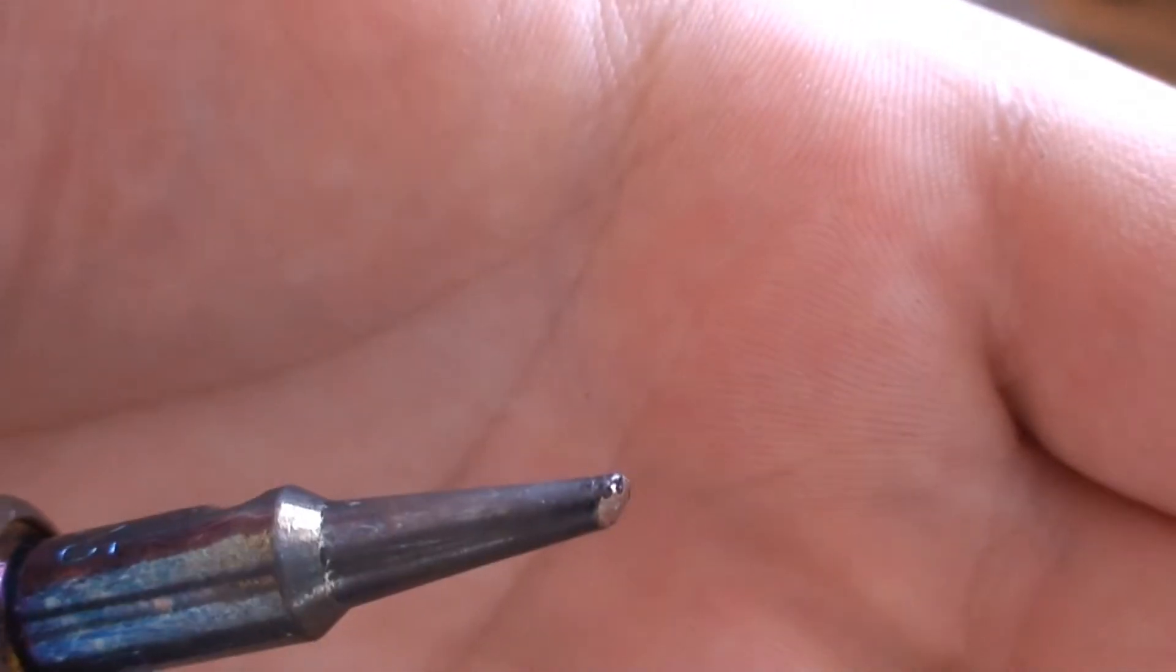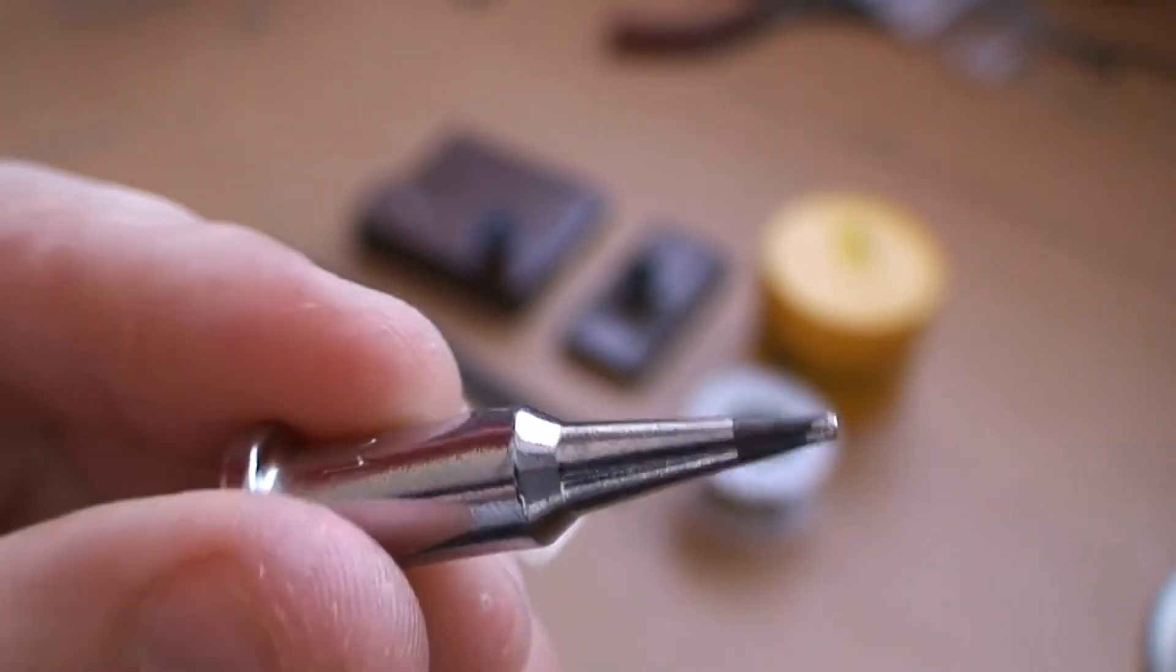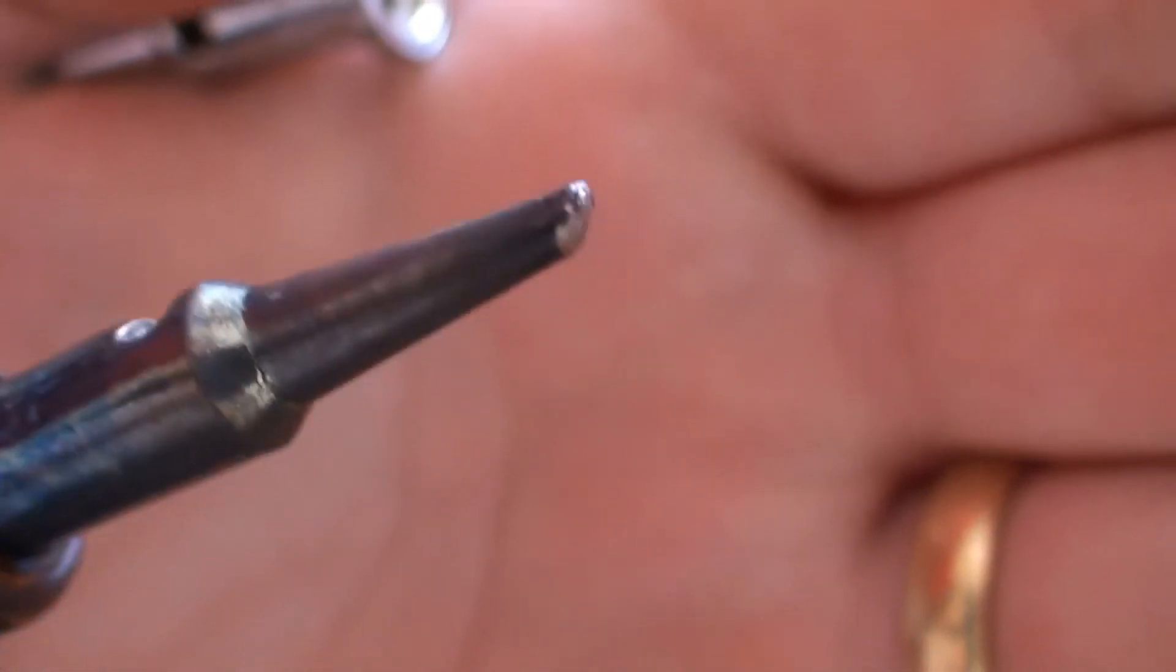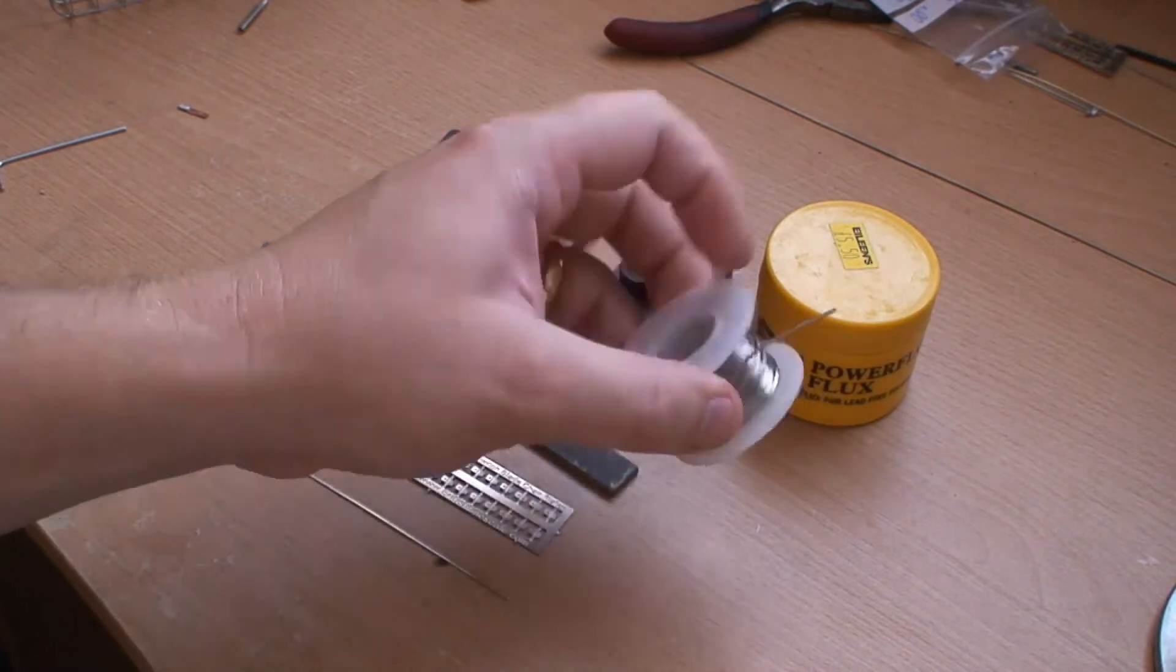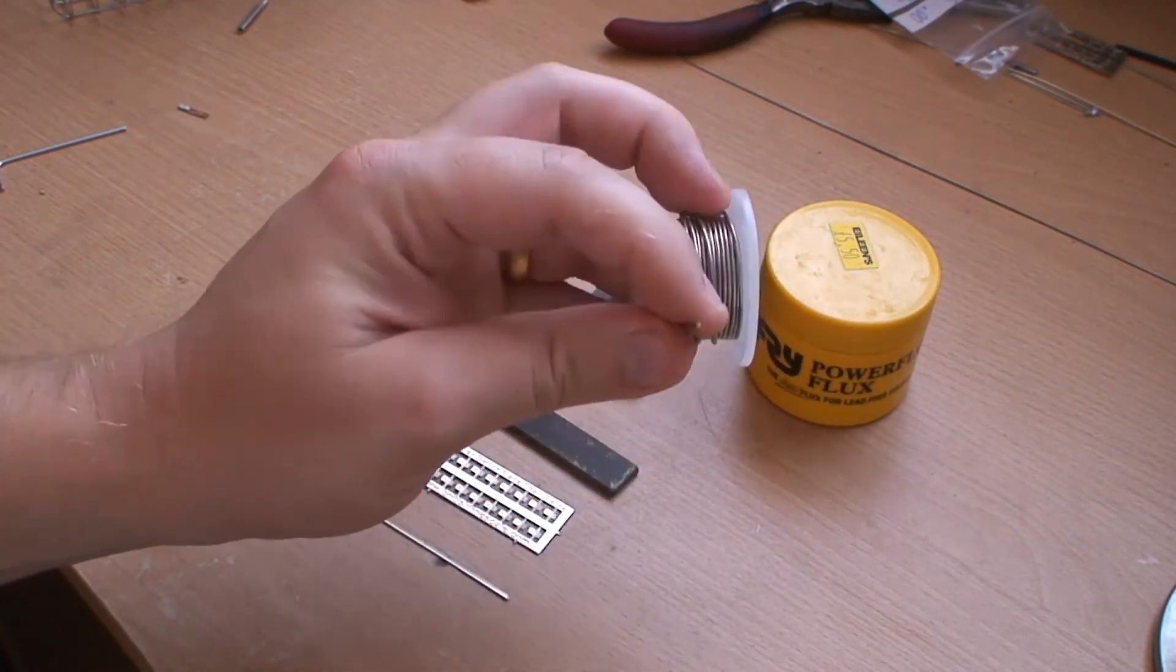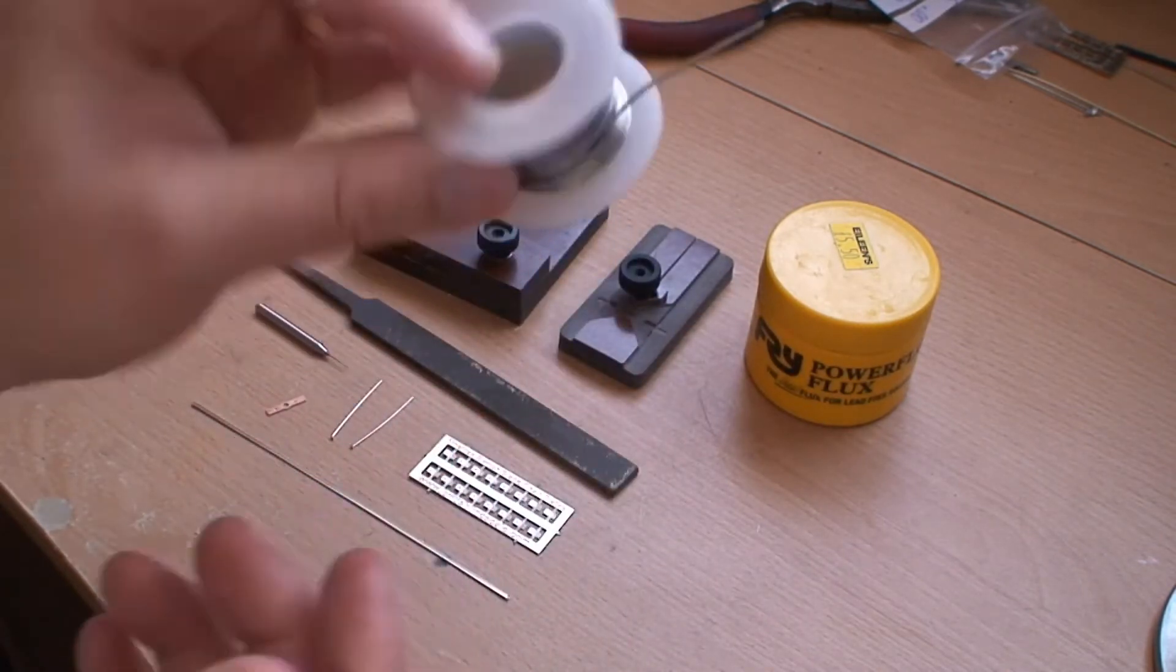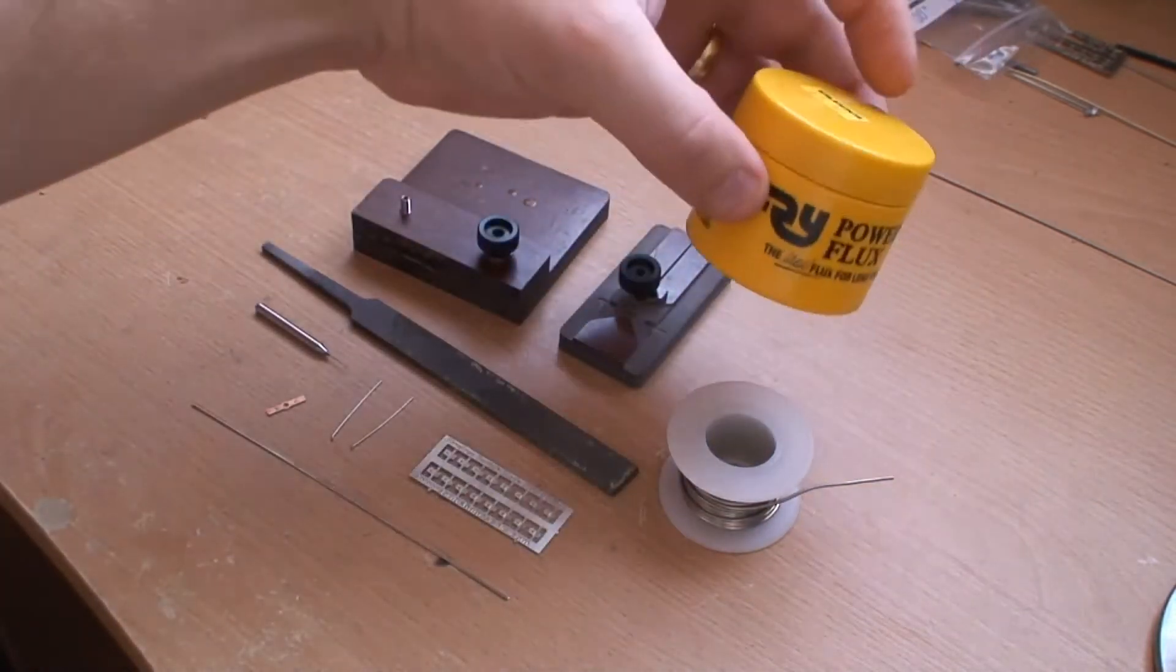I've found that to be the best to work with, and it gets the heat to the job better than, for example, I've tried a point tip and it just didn't seem to work as well. So that is what I recommend. You need solder. I'm using 1-millimeter resin core solder. I don't actually know exactly what the melting temperature is because the label's fallen off.